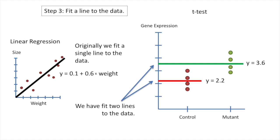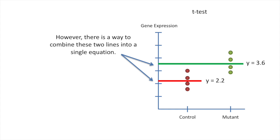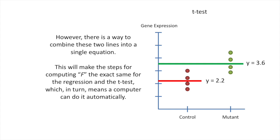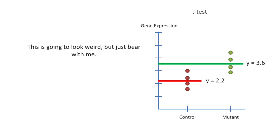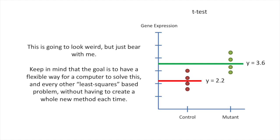Originally, when we did the regression, we fit a single line to the data. However, there is a way to combine these two lines into a single equation. This will make the steps for computing F the exact same for the regression and the t-test, which in turn means a computer can do it automatically. This is key because we don't want to do this by hand, ever. The goal is to have a flexible way for a computer to solve this and every other least squares-based problem without having to create a whole new method each time.